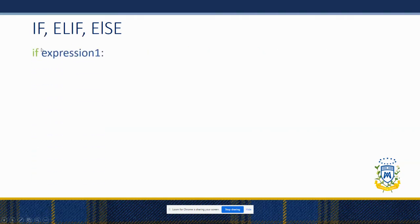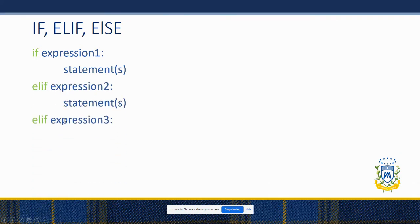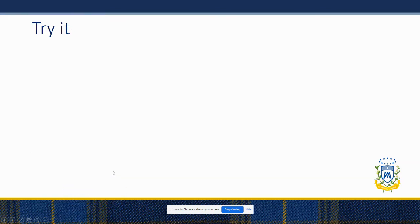So the way that it looks is: if, then you do your first expression, colon, indent, do this. Elif this happens, do this. Elif this happens, do this. Else, or otherwise, do this. So we're going to write a program to say whether a person is a child, a teenager, or an adult.